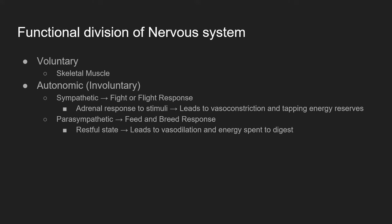The functional divisions of our nervous system are made up basically of two things: the voluntary system and the autonomic system. The voluntary system controls your skeletal muscle — the muscle in our arms, our legs, our body — it allows us to move and function in the world around us. The autonomic nervous system is the involuntary side. Things like breathing and digesting food — we don't have to think about. It just happens.